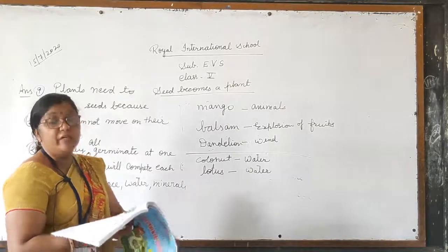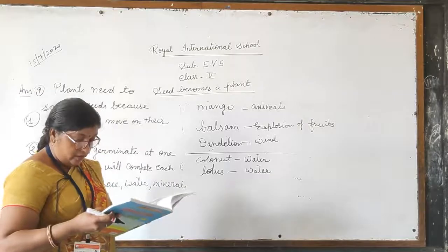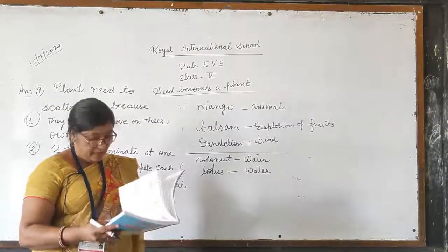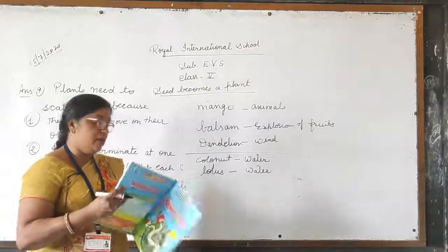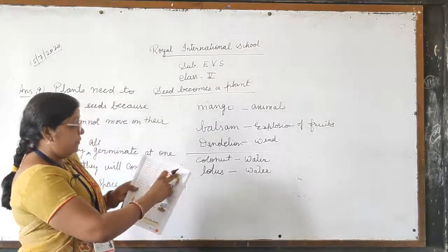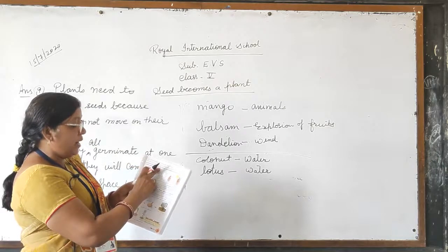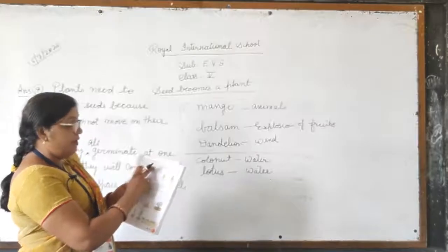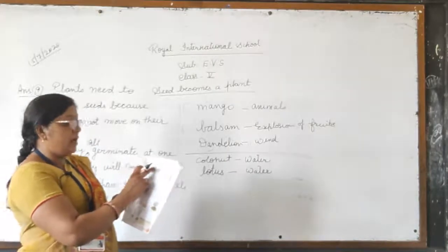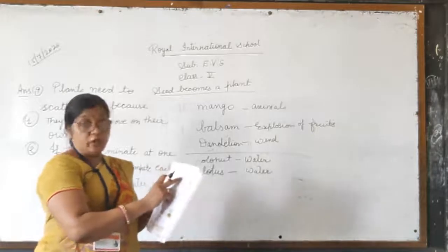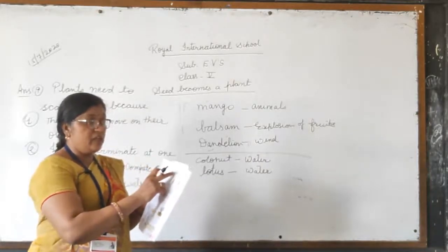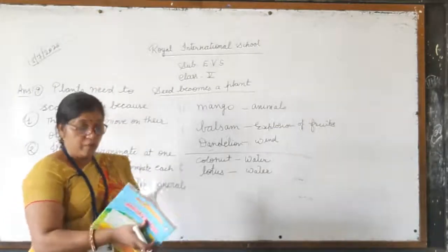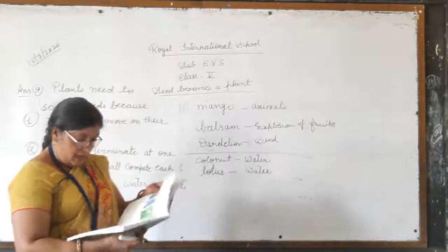Next question: what is vegetative propagation? Come to page number 59. The method of obtaining new plants from the leaves, stem, and roots of the parent plant is called vegetative propagation. Write up to that point.